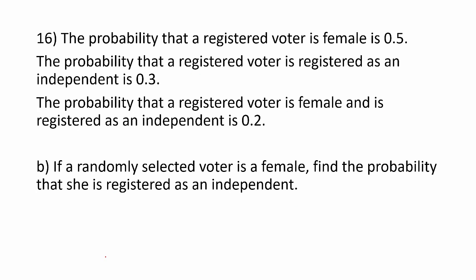Part B, if a randomly selected voter is female, find the probability that she is registered as an independent. If the voter is female tells us that the condition being established is that the voter is female, now we want to find the probability that she's independent. And from the formula, that's the probability that a voter is both independent and female, divided by the probability of the given condition, which is female.